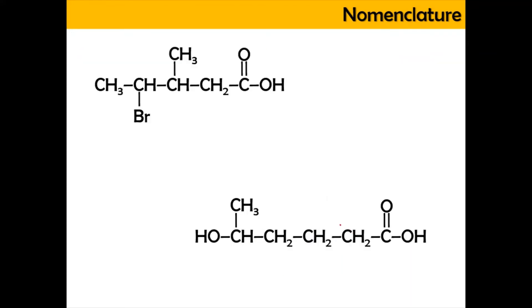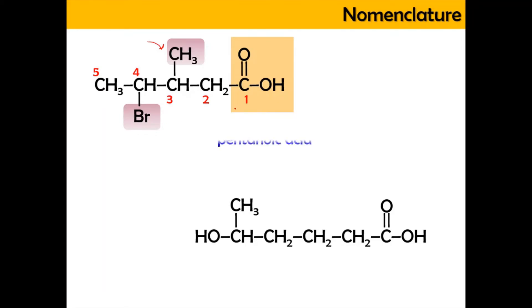Now we're going to do a few examples to understand the nomenclature better. If we have this structure here, it has a carboxyl group, and we do the numbering starting from number 1 at the carboxyl group: 1, 2, 3, 4, and 5 — so it will be pentanoic acid. At carbon number 3 there is a methyl substituent, and at carbon number 4 there is a bromine substituent. So the parent chain is pentanoic acid, carbon 3 has methyl, and carbon 4 has bromo. Following alphabetical order, the full name is 4-bromo-3-methylpentanoic acid.